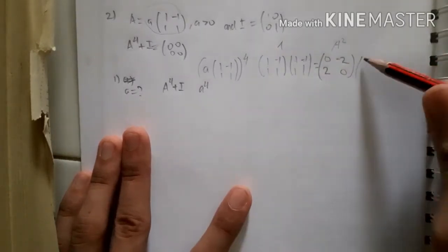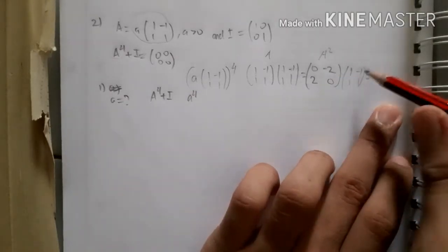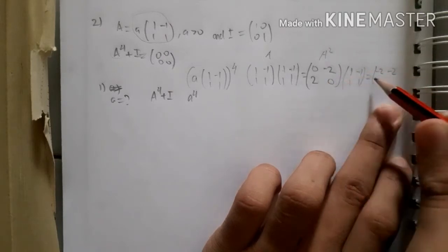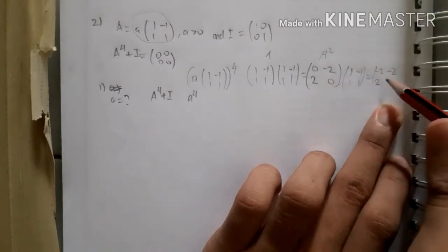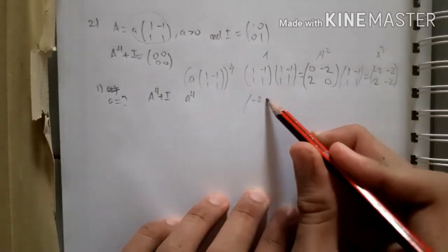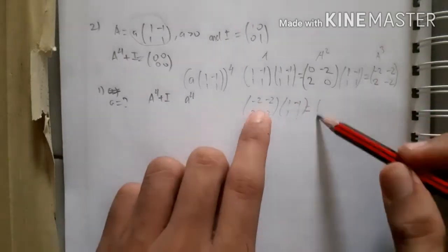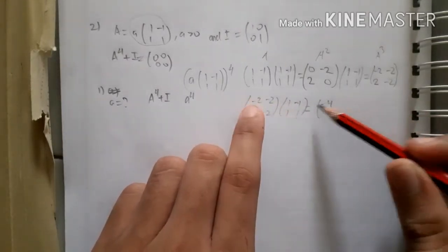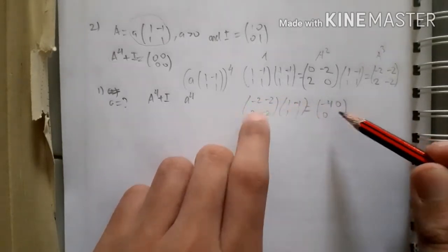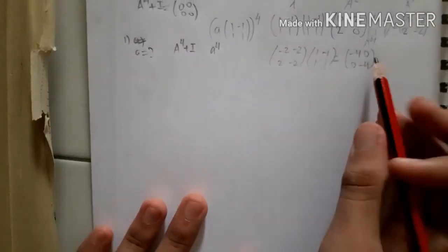Now multiply A squared by A again to get A cubed: [[0,-2],[2,0]] times [[1,-1],[1,1]] gives [[-2,-2],[2,-2]]. That is A to the power of 3. Multiplying once more by [[1,-1],[1,1]] gives A to the power of 4: [[-4,0],[0,-4]]. The diagonal entries are -4 and all off-diagonal are 0.